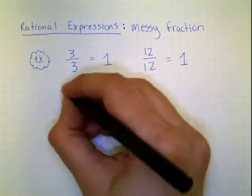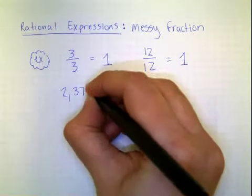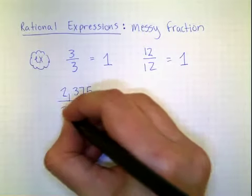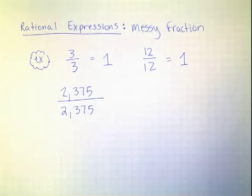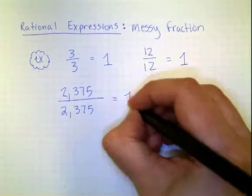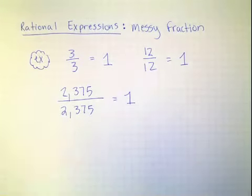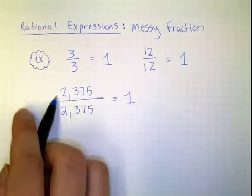So if I gave the fraction 2,375 over 2,375, what would you say it equals? Same thing, 1. There's a pattern here. They're all equal to 1 because they're the same thing on the top, the same thing on the bottom.